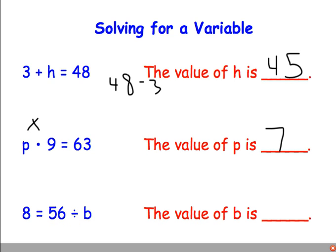The next one is 8 equals 56 divided by B. So again we're solving for the variable B. And we're asking ourselves 56 divided by what equals 8? We know that 56 divided by 7 is 8. So the value of B is 7.